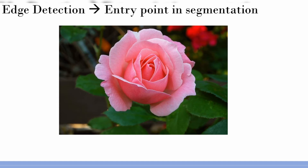Our primary objective is to move towards image segmentation where you actually separate out the foreground from the background — or many such foregrounds from backgrounds. It may not be binary; it can be multiple levels. We will discuss all that. But let us start with edge detection.